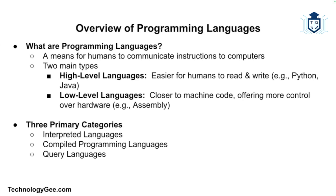Before we dive into specifics, it's important to understand what programming languages are. In simple terms, programming languages are a way for humans to communicate instructions to a computer. These languages are either high level, meaning they are easy for humans to read, or they're low level and closer to the computer's machine code. The three primary categories we'll focus on are interpreted languages, including scripting and markup languages, compiled programming languages, and query languages, including assembly languages. Each of these categories has its own purpose, benefits, and limitations.